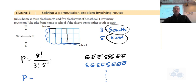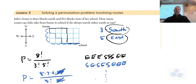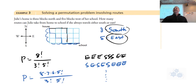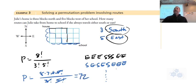Working it out: eight times seven times six times five factorial, divided by three factorial times five factorial. The five factorials cancel, and three factorial is six, so you get eight times seven times six divided by six, which simplifies to fifty-six. You could do most of that in your head once you cancel the factorials.